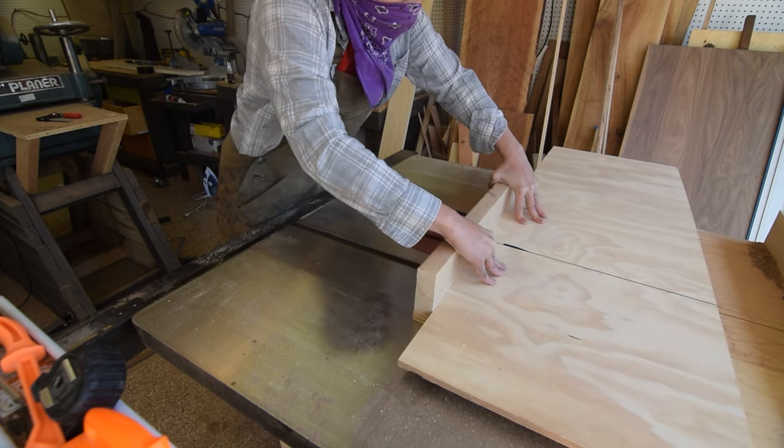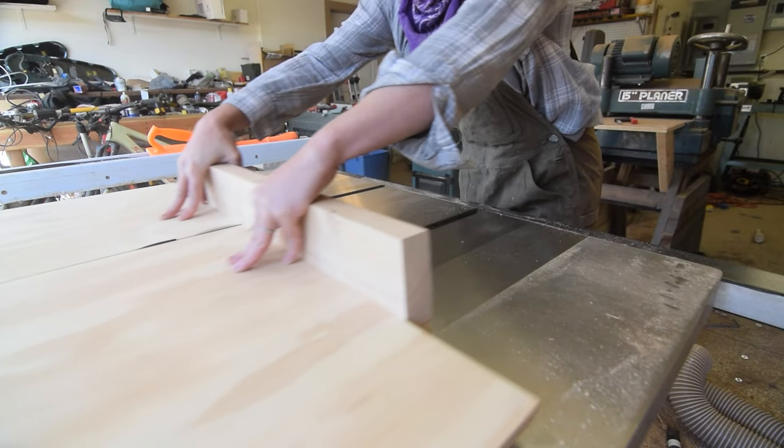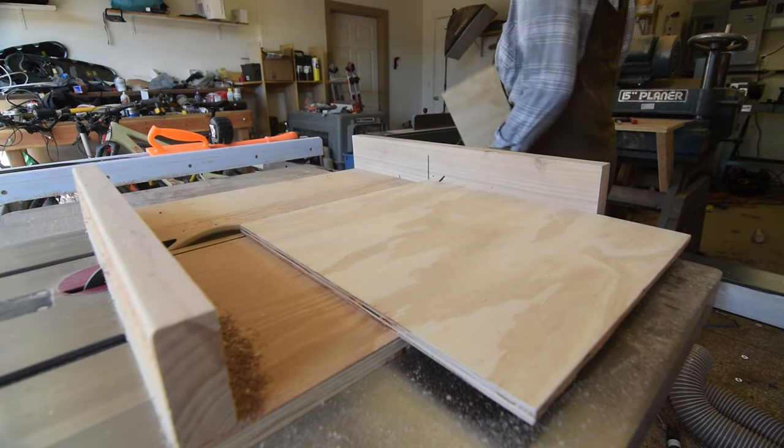Next, I cut the top panels that would hold the dog food bowls after I used a router and a circle cutting jig to cut holes just large enough for each bowl.